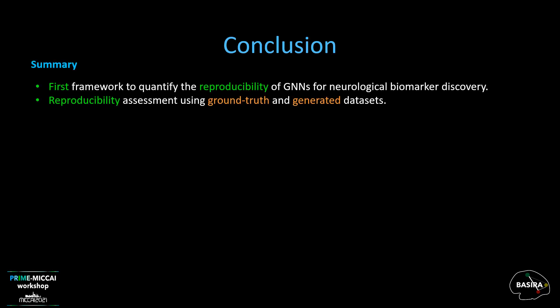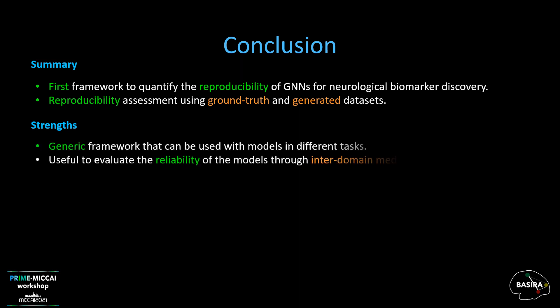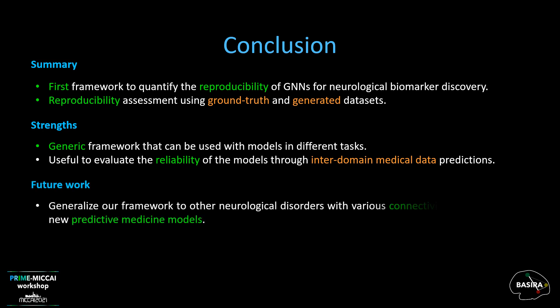In this work, we introduced the first framework to quantify the reproducibility of GNNs for neurological biomarker discovery. We performed reproducibility assessment using ground truth and generated datasets. Our framework is generic and can be used with models implemented for different tasks such as classification or regression. It is useful to evaluate the reliability of models in terms of biomarkers through inter-domain medical data predictions. In our future work, we aim to generalize this framework to other neurological disorders with various connectivity measures and new predictive medicine models.